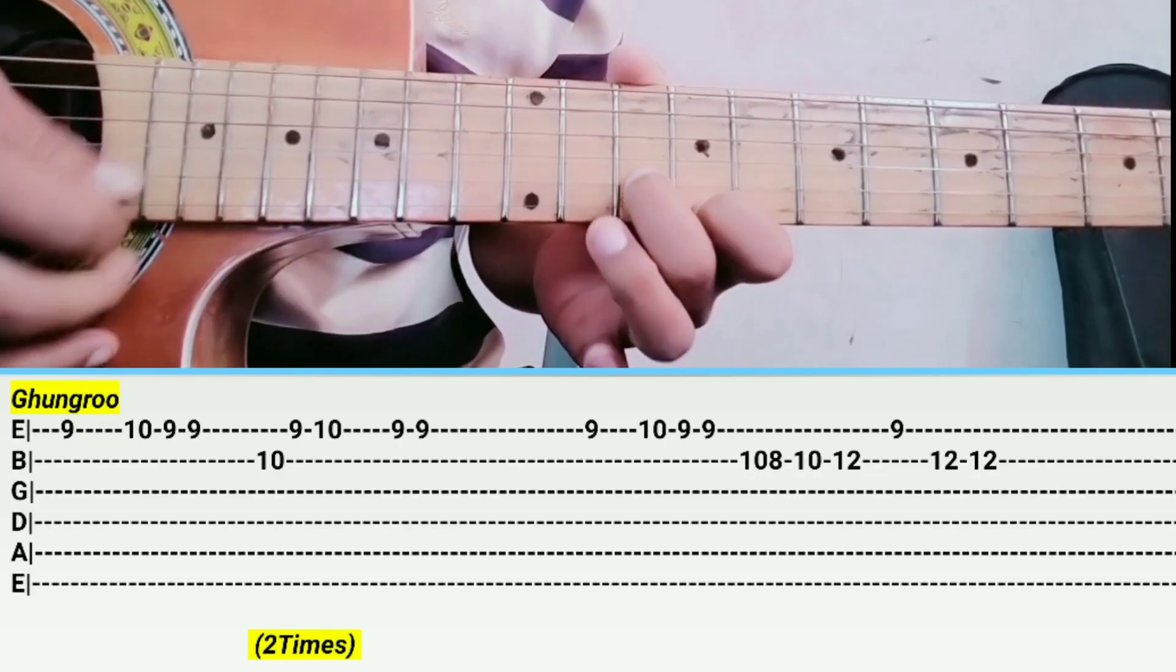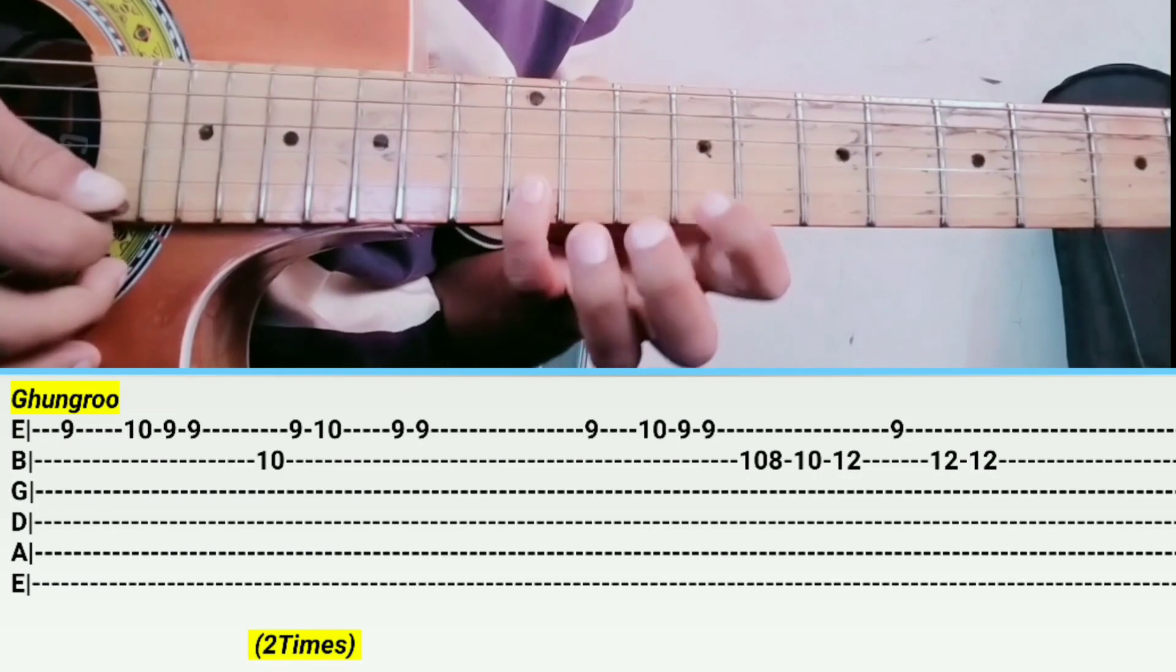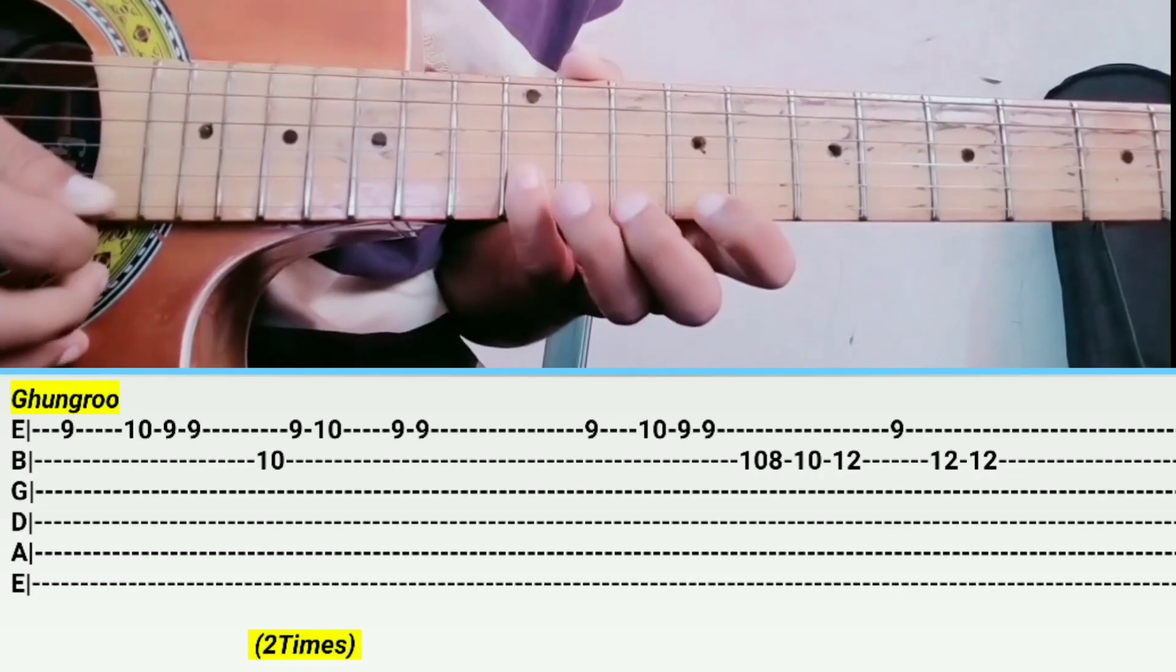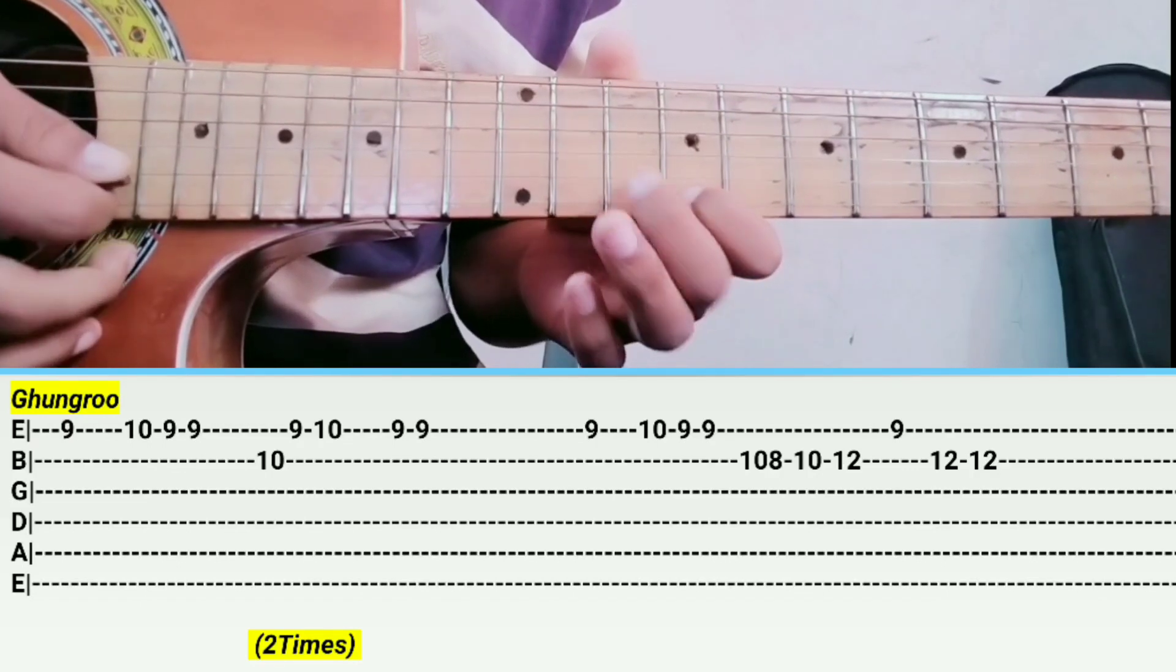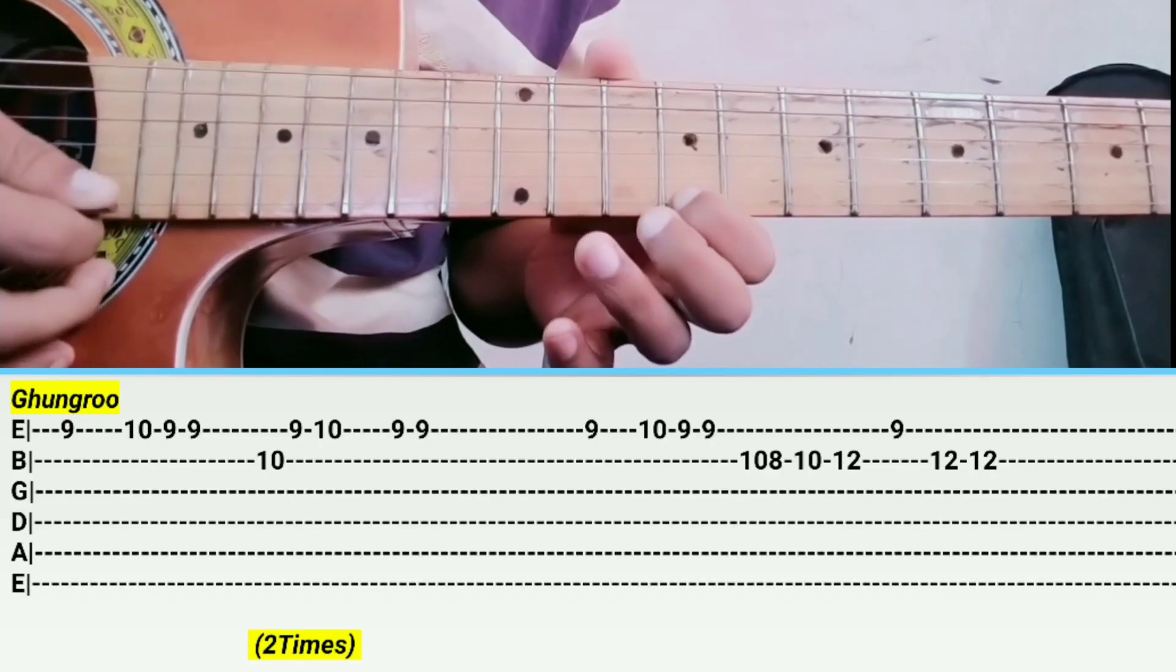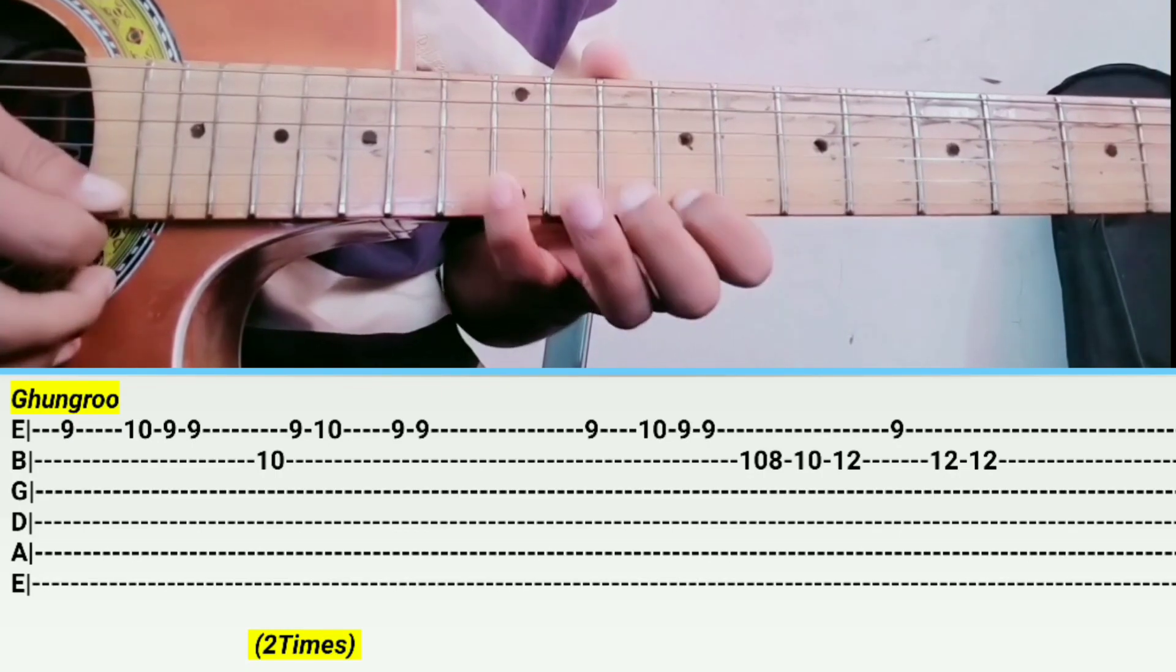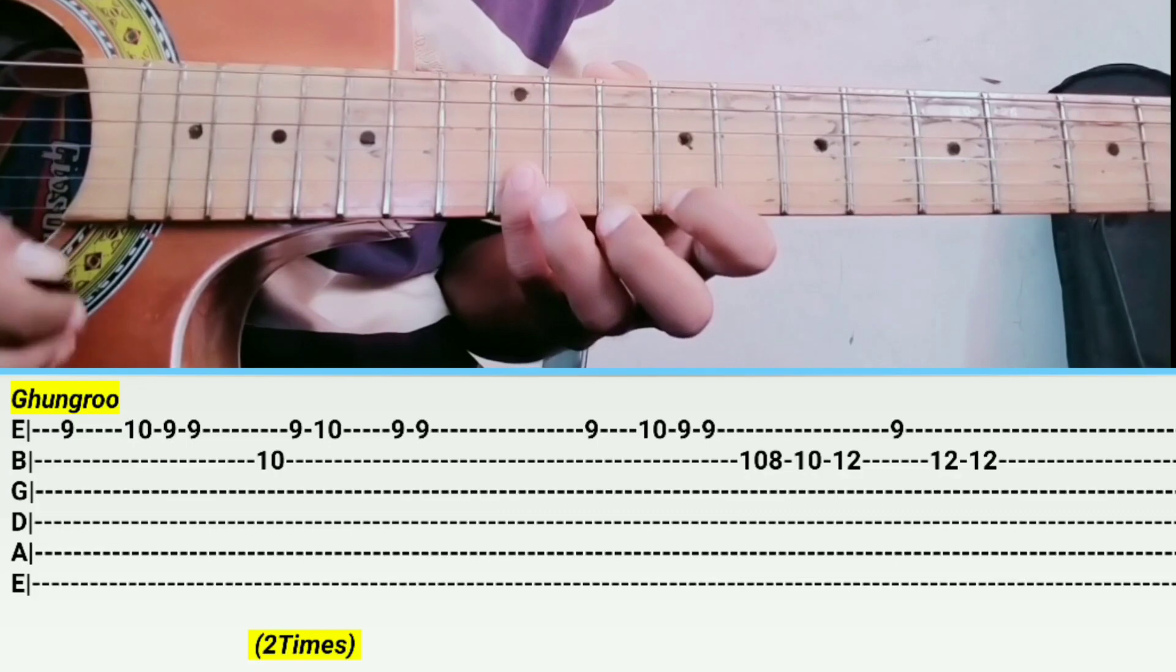10-10-12 string, fill 12, B string, fill fill 9 over each string, fill 12 over B string. Fill fill 10-9-10-9-9, 10-9-9, 10-9-9, 10-10-12, B string, 9-12.